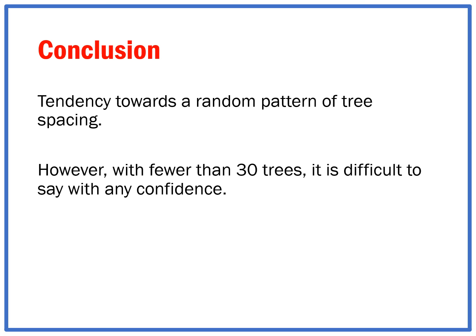However, although the data did imply there was a tendency towards a random pattern, because we had fewer than 30 values, fewer than 30 trees, it is difficult to say with any confidence. If we had at least 30 variables we were measuring the distance from, we could say there was a random, regular, or clustered pattern. But we can't say that.